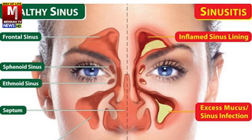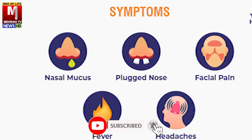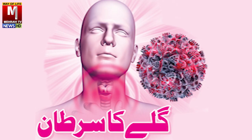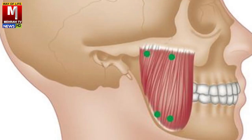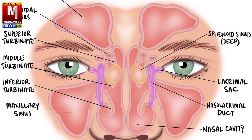اگر پانچ چھ دن گزرنے پر علامات ختم نہ ہوں یا شدید ہو جائیں تو بیکٹیریل انفیکشن ہو سکتی ہے، خصوصاً اگر ناک بند ہونا اور سانس لینے میں دشواری، ناک سے سبزی مائل رطوبت، گلے کے پچھلے حصے میں کچھ گرتا محسوس ہونا، آنکھ، ناک، جبڑے، گال یا دانتوں کے اوپر شدید دباؤ، سر کے اگلے حصے میں شدید درد اور مسلسل بخار 101 سے 104 ڈگری کے درمیان رہے تو یہ سائنوسائٹس ہو سکتا ہے۔